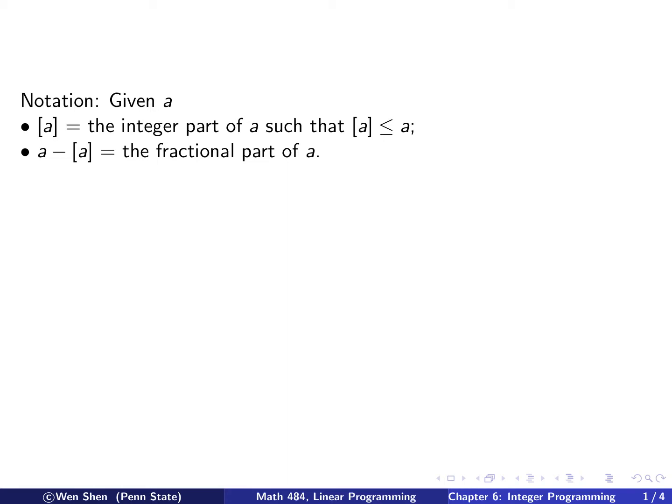First step, we introduce some notation. Let's say a number A is given. We now write the following: if we put a bracket around the A, this means we take the integer part of A that is smaller than A, such that this integer part of A is less than or equal to A. So if A is an integer, then this will simply equal A. Otherwise we'll have A minus the integer part of A. This becomes the fractional part of A. Pay attention, we did not specify the sign of A.